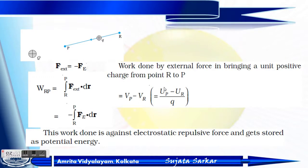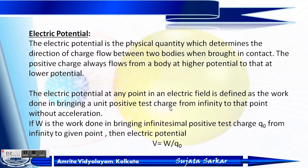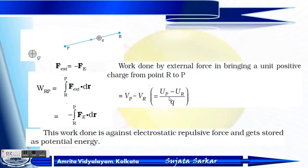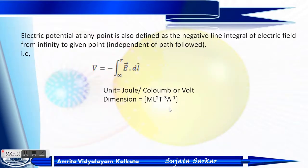This work done is denoted as U_P minus U_R, divided by charge q. So the work done is equivalent to (U_P minus U_R) divided by q, where q is the charge.